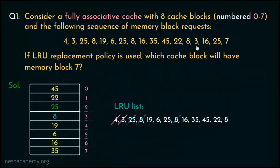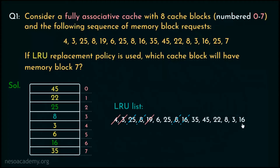During block request number 3, we opt for replacement since the cache is full. From our LRU list, block number 19 is the least recently used, so block 19 is evicted, making space for block 3. Block 3 is added to the LRU list as the most recently used. For block request 16, it results in a cache hit, but since it is now the most recently used, it is placed at the end of the list. Block request 25 also results in a cache hit, and the LRU list is updated placing 25 at the end.